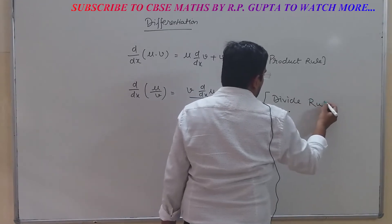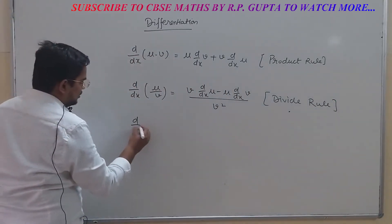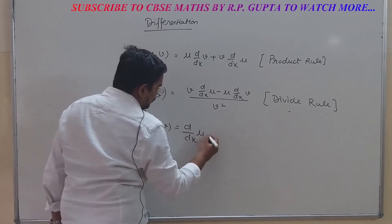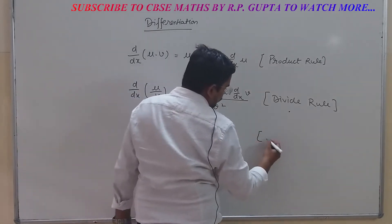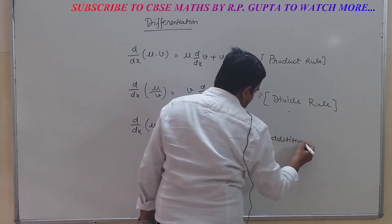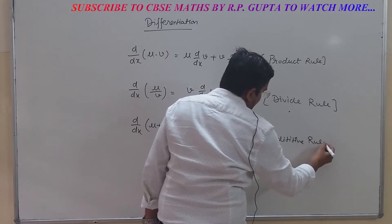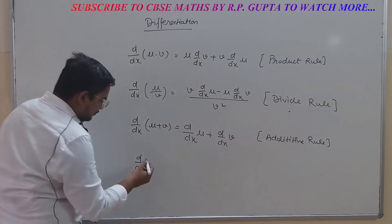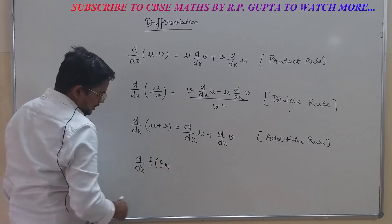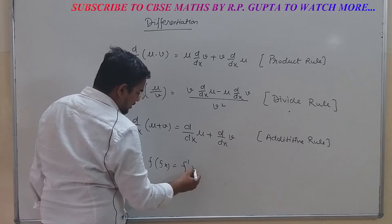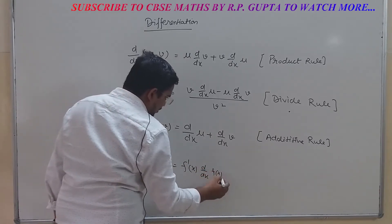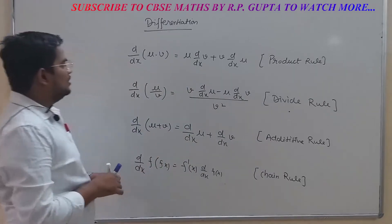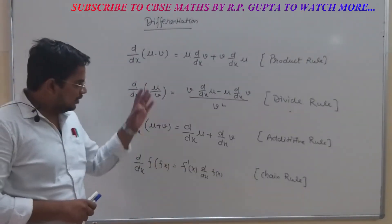Third formula: d/dx of (u + v) equals d/dx of u plus d/dx of v. This is called the additive rule. And one more rule — if there is a function inside a function, like f(g(x)), then we use the chain rule. First we find f'(x), then we find d/dx of g(x). These are the basic rules to find the differentiation of any question. All of you please note down these rules.